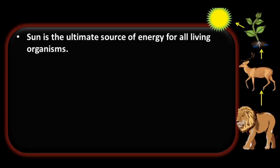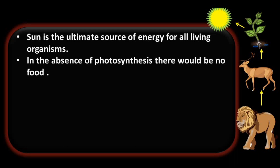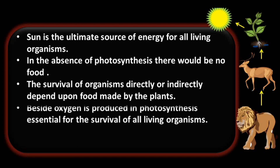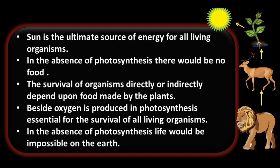The sun is the ultimate source of energy for all living organisms. In the absence of photosynthesis there would be no food, and the survival of organisms directly or indirectly depends upon food made by plants. Besides food, oxygen produced in photosynthesis is essential for the survival of all living organisms in the respiration process. So in the absence of photosynthesis, life would be impossible on Earth.